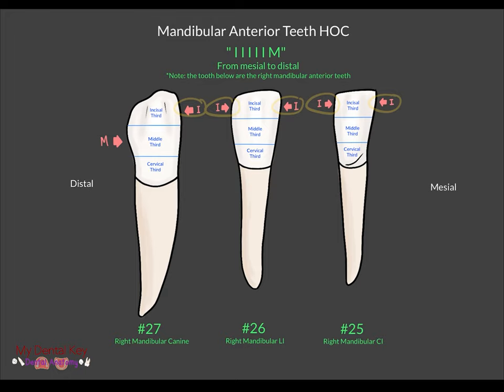The distal height of contour on the mandibular canine is in the middle third. Also, the height of contour on the mesial is located in the incisal third, as well as the height of contour for the distal.